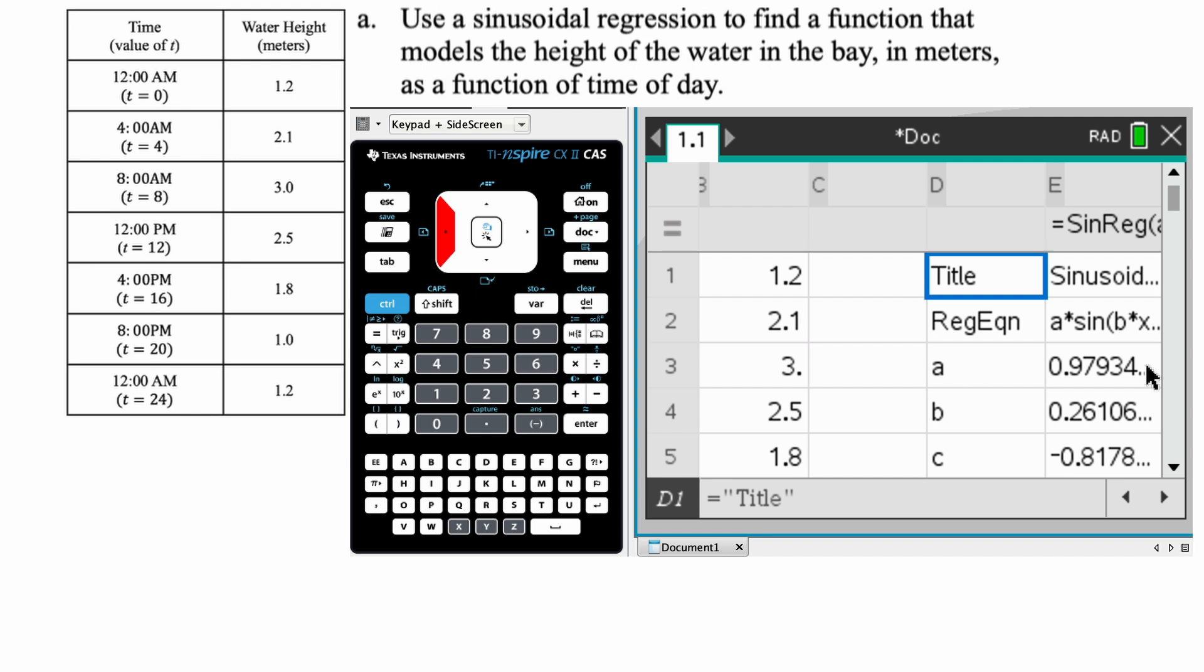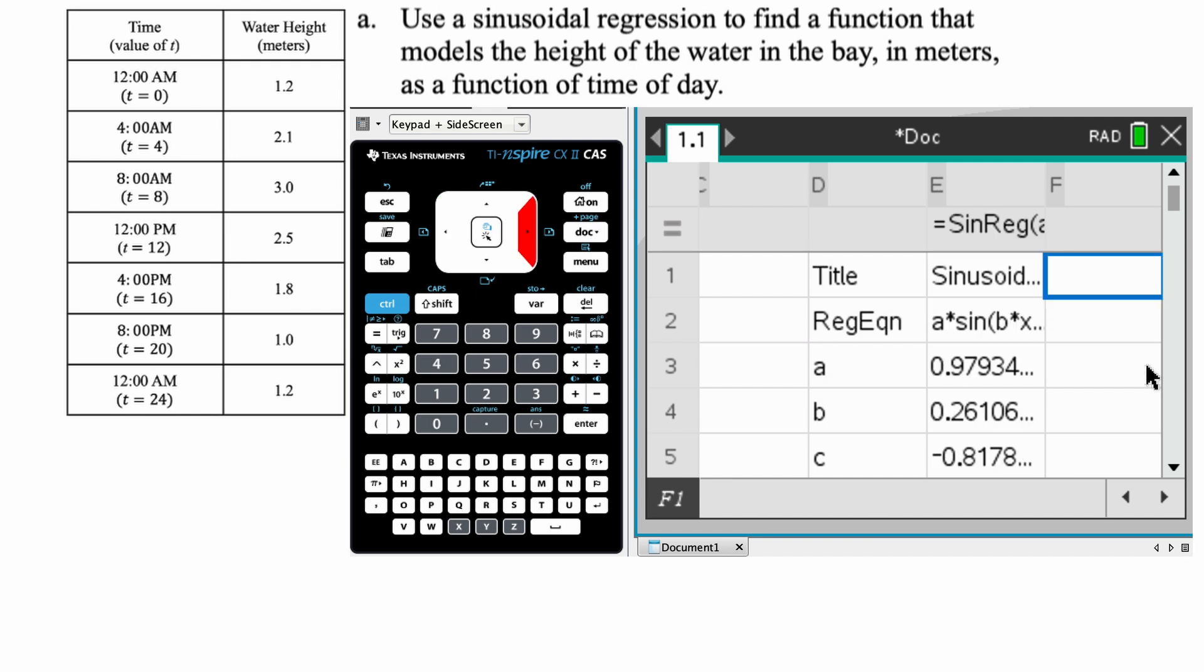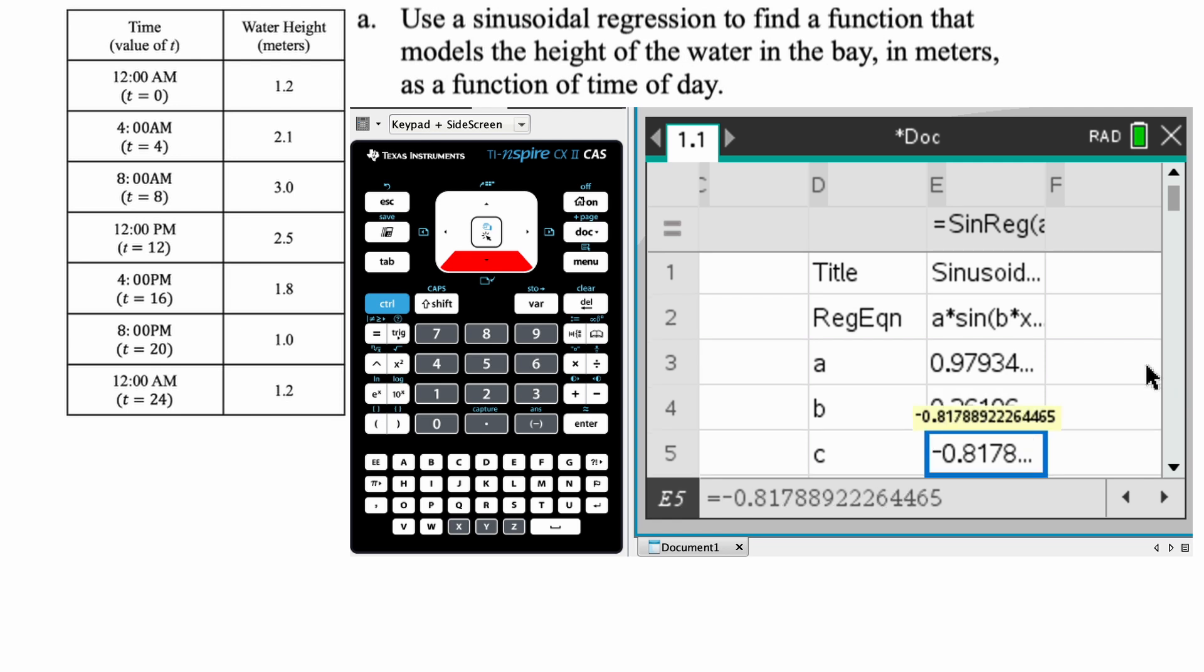So we got a title, and that's sinusoidal regression. A regression equation. So here it's showing us that our regression equation will be of the form A times sine of B times X plus C, and then plus D on the outside. So it's the quantity BX plus C. And then you can look through and see what A, B, C, and D are. And you can write your equation based on this.